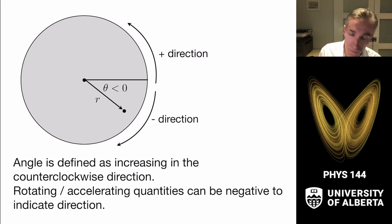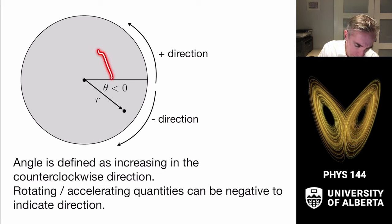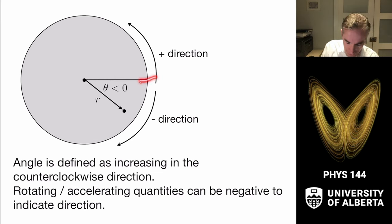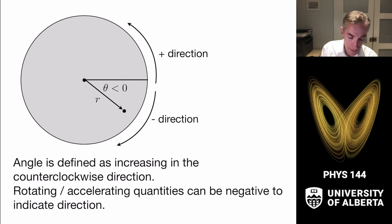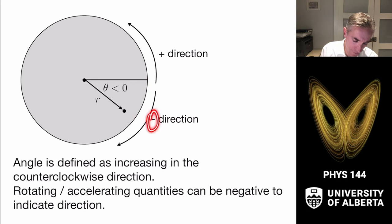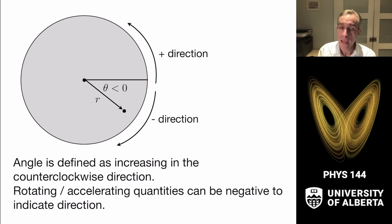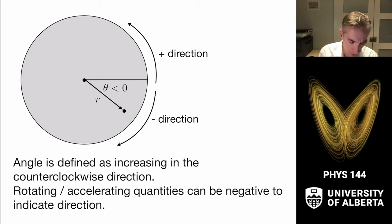We generally refer to the angle in terms of a standard direction, where positive angle is the counterclockwise direction, following the conventions of math. So start at the x-axis — the y equals zero line — and move around in the positive direction; that's counterclockwise. Going clockwise when viewed from above is the negative direction. An angle less than zero refers to moving in the clockwise direction from our arbitrary line. We also use negative signs for the angular equivalents of velocity and acceleration, so they will often also be called negative.